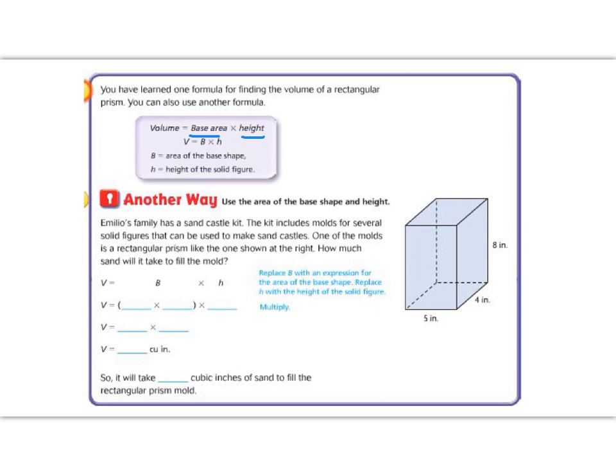This time we're going to do base times height. So the base is this one down here, and it is five by four. So five times four is the base times eight is the height. Five times four is 20 times eight. Let's do that to the side. 20 times eight.